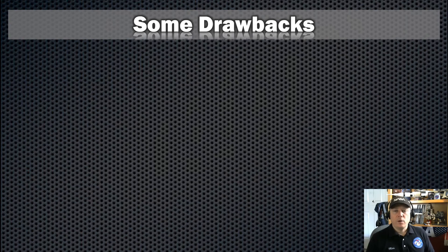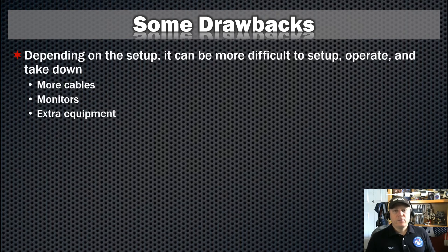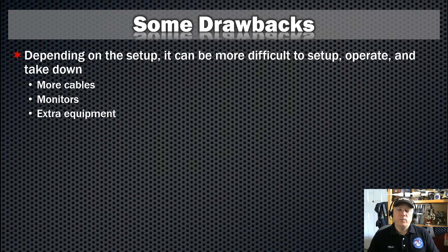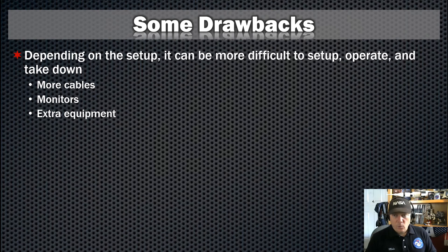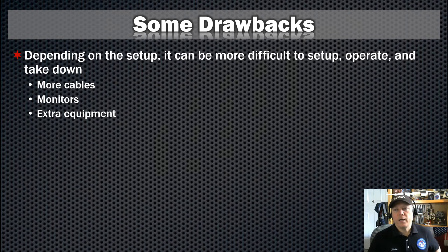So what are some drawbacks with regards to EAA? The first one is, depending upon your setup, it can be way more difficult to set up, operate, and take down. You have to deal with more cables, you've got to make sure you're bringing out a monitor or some device to actually view the image, and there's lots of other equipment to deal with compared to visual — especially having to rely on remote power if you're not near 110-volt power.